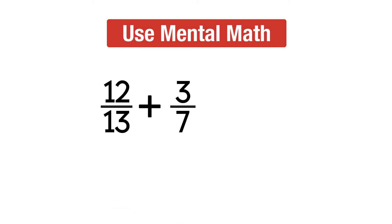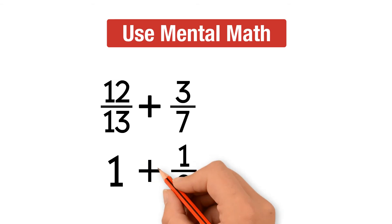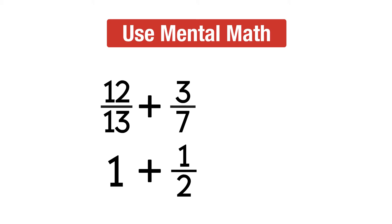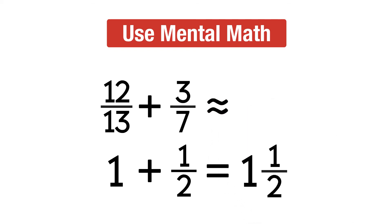The second method is using mental math. Let's estimate 12 over 13 plus 3 over 7. First we round 12 over 13: the numerator is about the same as the denominator, so we can round to 1. Now let's estimate 3 over 7: the numerator is about half of the denominator, so we can round to half. Now we add the two rounded numbers: 1 plus 1 half equals 1 and 1 half. So 12 over 13 plus 3 over 7 is approximately 1 and 1 half.